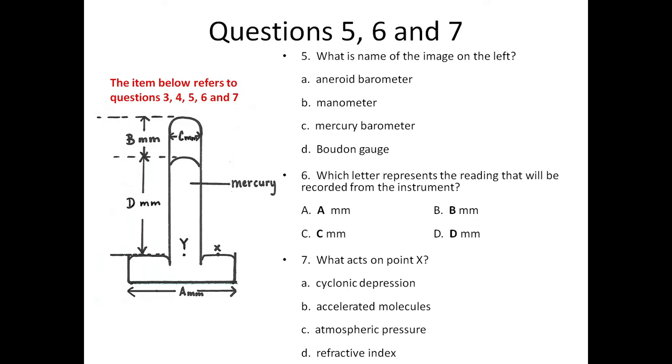Question five: What is the name of the image on the left? A: An aneroid barometer, B: A manometer, C: Mercury barometer, or D: A Bourdon gauge.